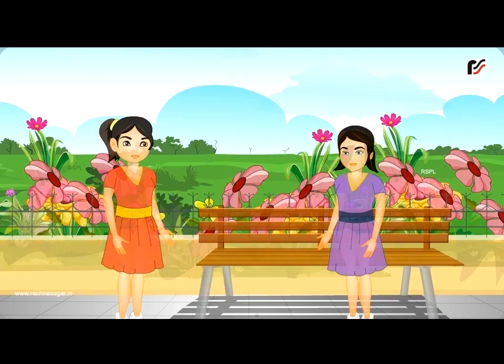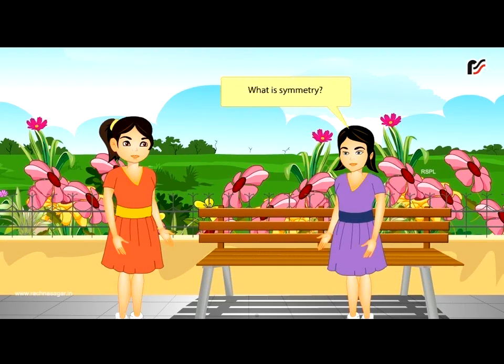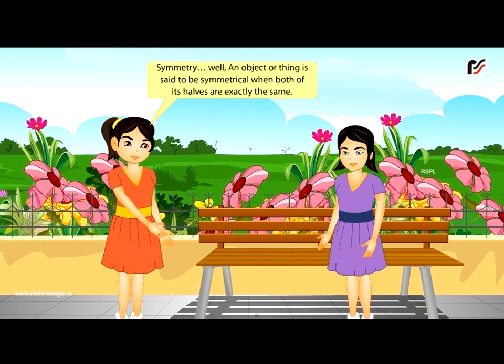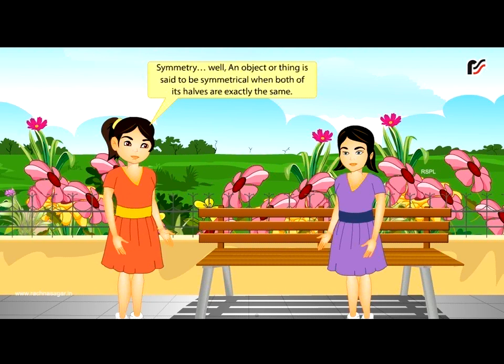Symmetry. What is symmetry? An object or thing is said to be symmetrical when both of its halves are exactly the same.